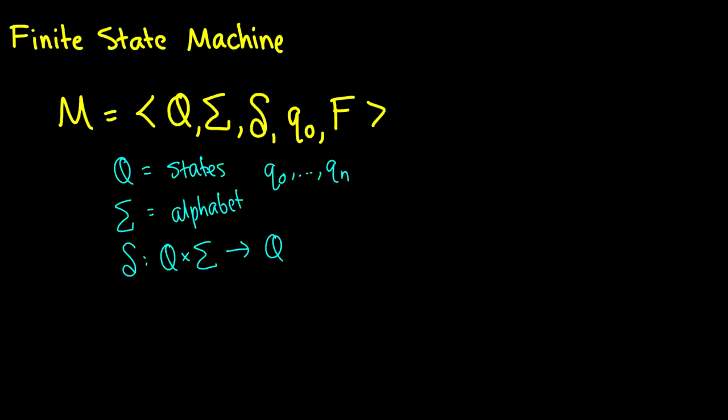Delta is a function that takes a state and a letter in our alphabet and takes it to another state. So you'll see how this works in a second, but for instance I'd have delta of Q zero and some letter A, and out would come another state that it goes to. We also have Q zero, which is going to be our starting state.